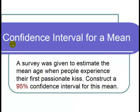This is a video on finding a confidence interval for a mean. The question states a survey was given to estimate the mean age when people experience their first passionate kiss. Construct a 95% confidence interval for this mean.